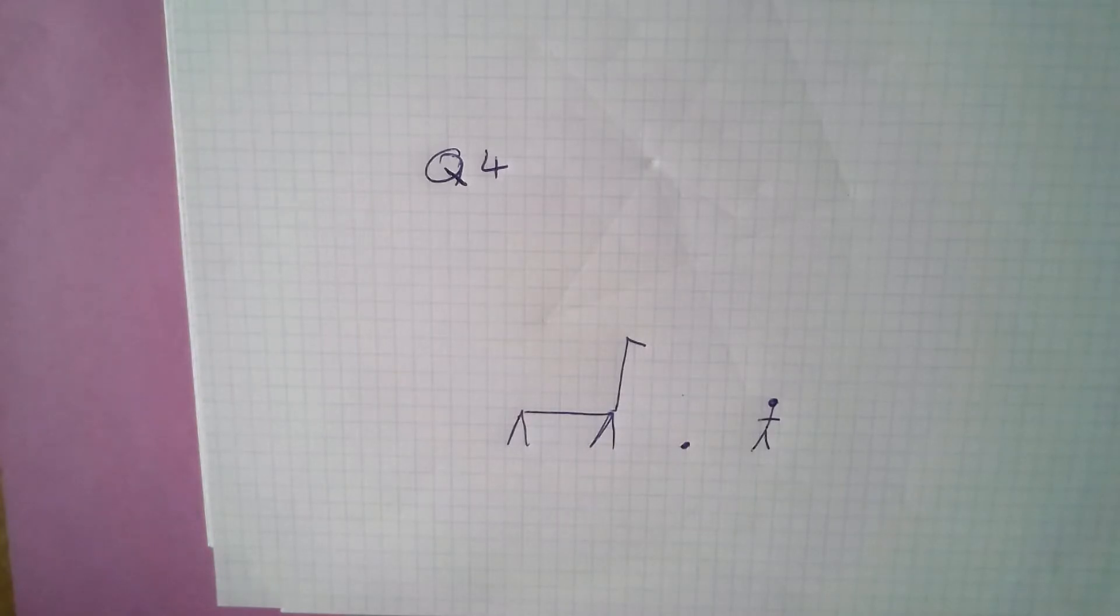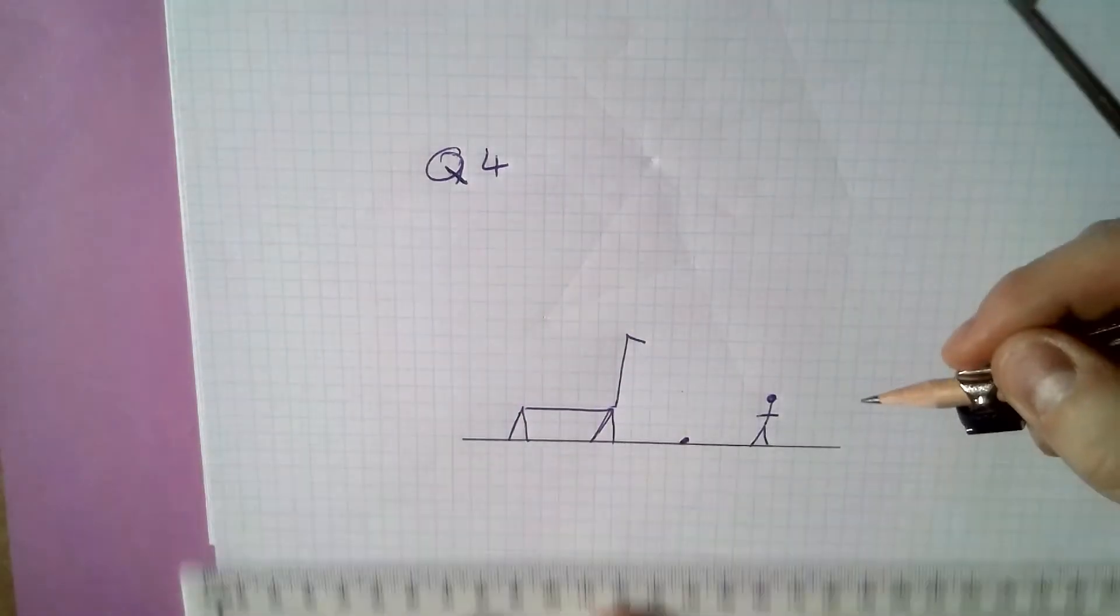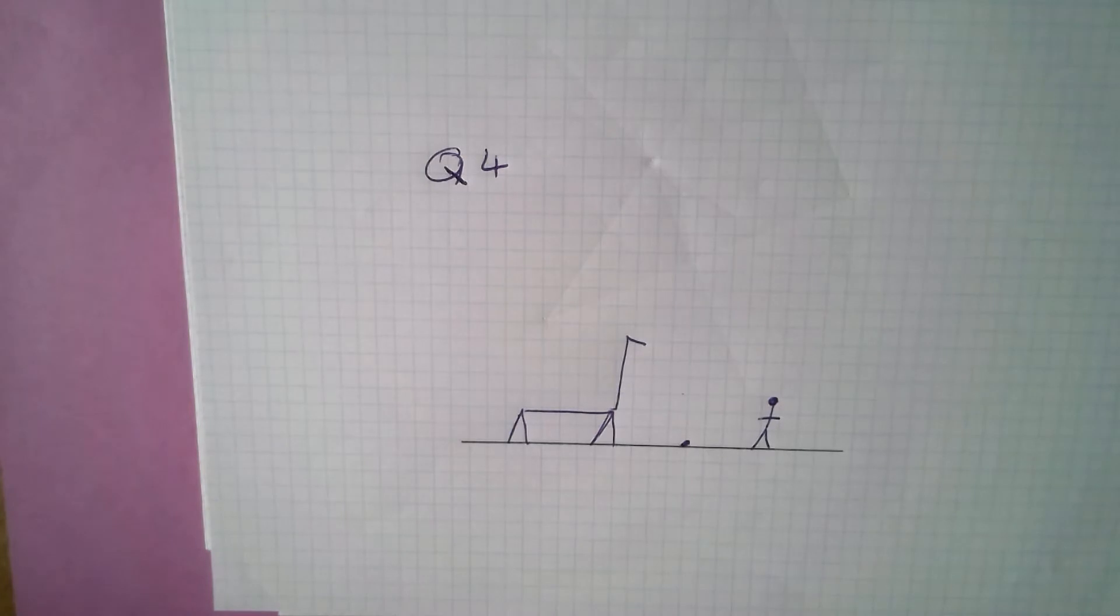Question four requires you to draw a vertical wall between a giraffe and a person. The first thing I'm going to do is draw the floor in. And then my wall needs to be perpendicular to this. So I'm going to be doing a perpendicular bisector starting at that point there.